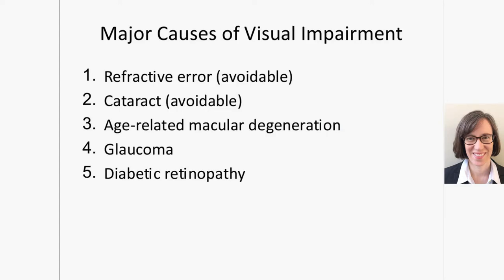The major causes of visual impairment — the top two are things we can easily treat: refractive error and cataract. And yet we see in country after country that these are the top two causes of visual impairment. There's a lot of room for improvement if we can just address those two things better. The other three major causes are age-related macular degeneration, glaucoma, and diabetic retinopathy. Treatments exist that can slow the progression of vision loss, but you need to be diagnosed and then be compliant with treatment recommendations.